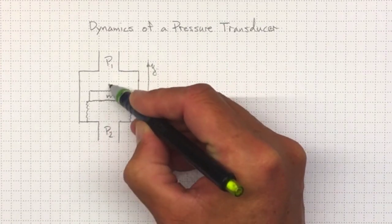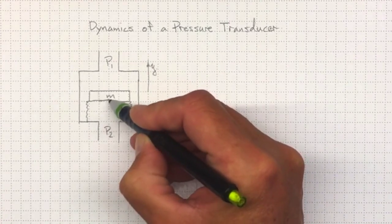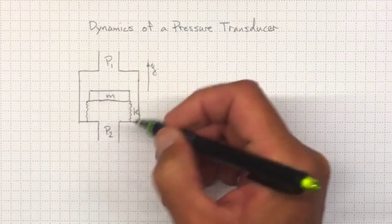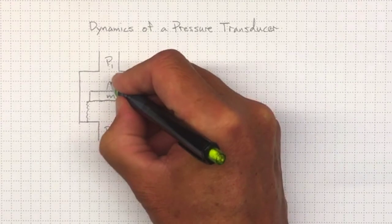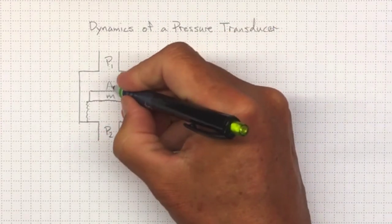So if P1 is greater than P2, it'll push downwards. If P2 is greater than P1, it'll push upwards. And the force that it pushes with will depend on the surface area of that diaphragm.